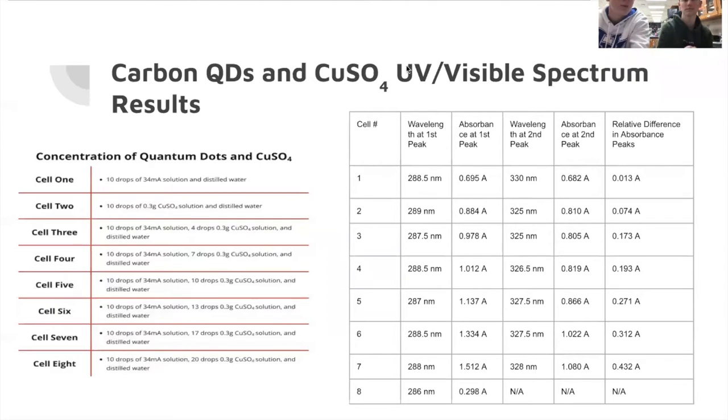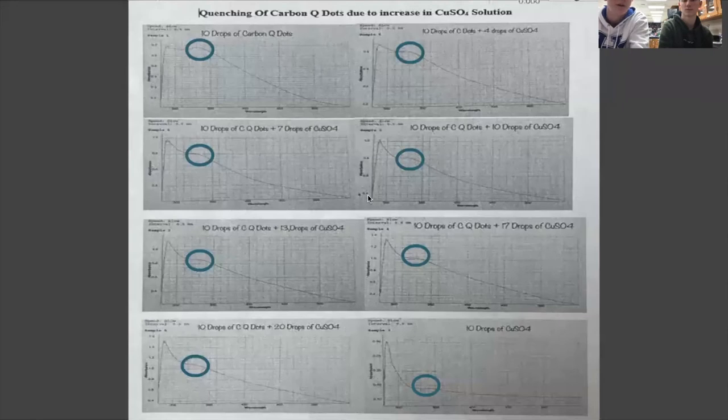In order to prove that quenching exists when we exposed it to copper sulfate, we created eight different cells with different amounts of copper sulfate and the same amount of quantum dots. When we did that, we put it in our UV spectrometer, and what we got was two different peaks at different wavelengths. Our first peak and our second peak are presented here in the table, and the difference between those peaks in absorbance is presented on the right.